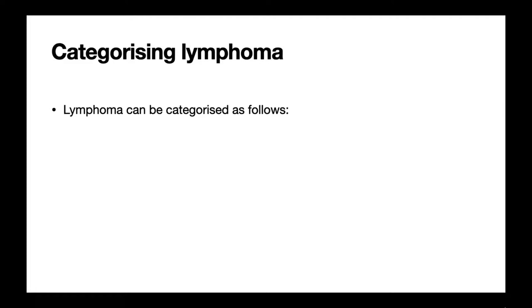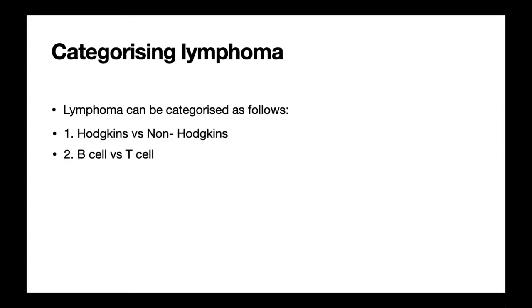Now let's categorize lymphoma, as this is quite useful when thinking about what type of lymphoma a patient might have. There are three main ways. The first — which you may be aware of — is Hodgkin's versus non-Hodgkin's. We can also categorize by the cell type affected: is it a B cell or a T cell lymphoma? Finally, we can categorize by severity: is it high grade or low grade? This may be important when it comes to treating a patient.